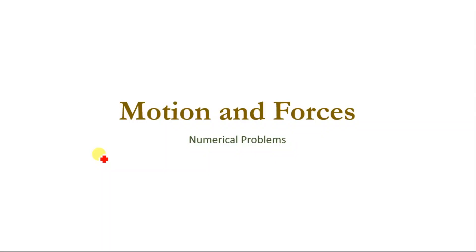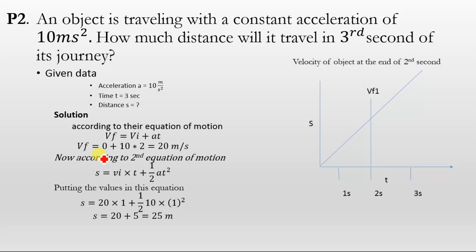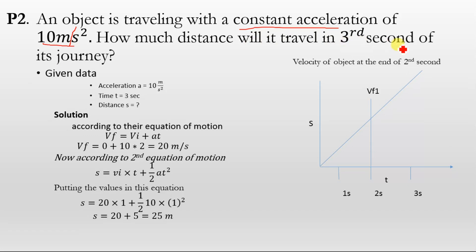Motion and Forces Numerical Problems, Problem number 2. An object is travelling with a constant acceleration of 10 meters per second squared. How much distance will it travel in the third second of its journey?